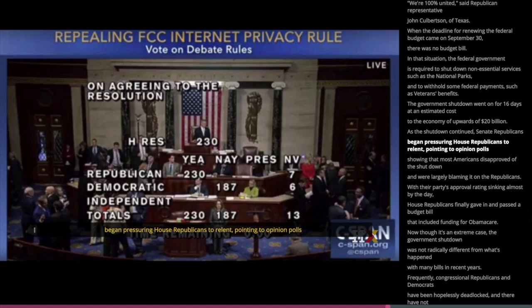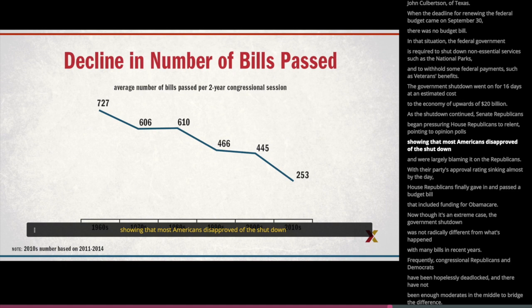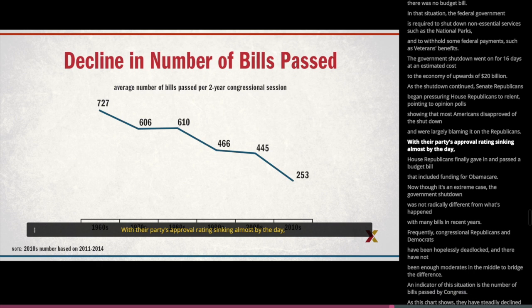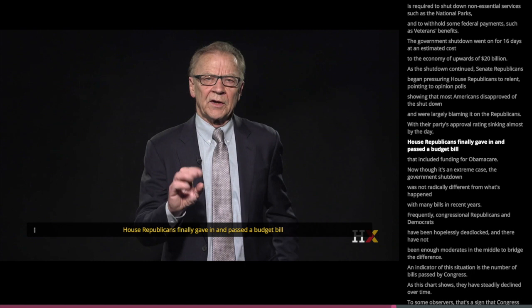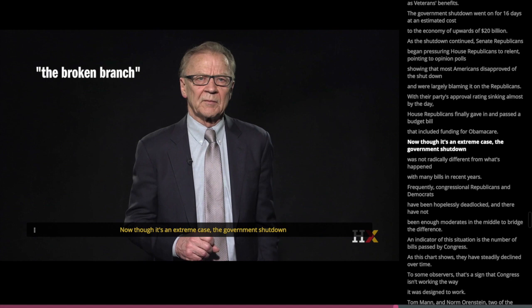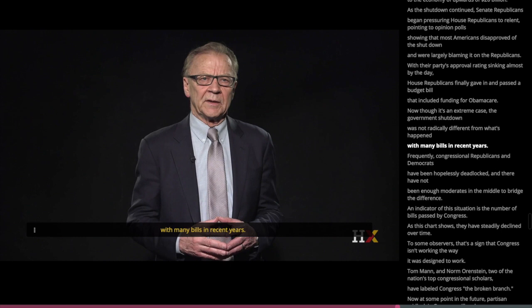An indicator of the partisan impasse is the number of bills passed by Congress. As this chart shows, they have steadily declined over time. To some observers, that's a sign that Congress isn't working the way it was designed to work. Tom Mann and Norm Ornstein, two of the nation's top congressional scholars, have labeled Congress the 'broken branch.' Now, at some point in the future, partisan gridlock in Congress will end and the institution will operate more normally.